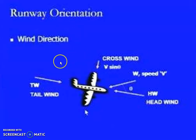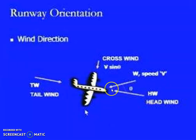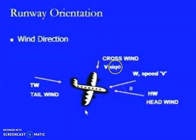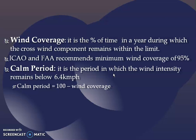We have to orient the runway in the direction of wind. Headwind will help us to take off the aircraft and also for landing the vehicle in a safer distance. And crosswind, which is at V sine theta, is also dangerous when it exceeds 25 kilometers per hour. In the headwind direction, we have to orient our runway. So, how about the wind coverage? It is a percentage of time in a year during which the crosswind component remains within the limit.